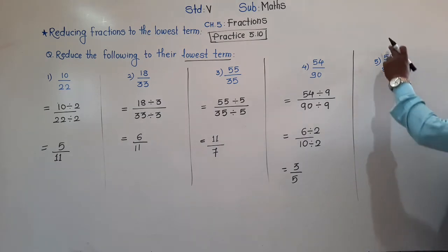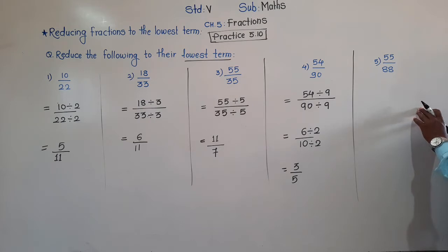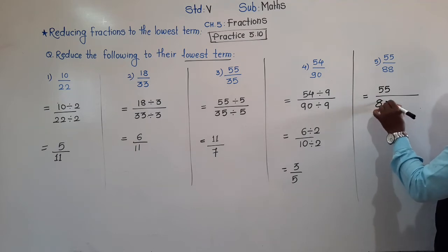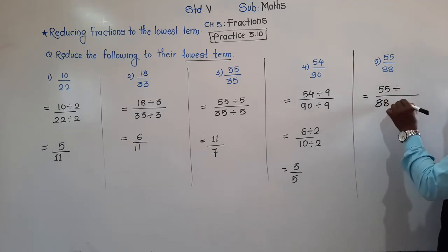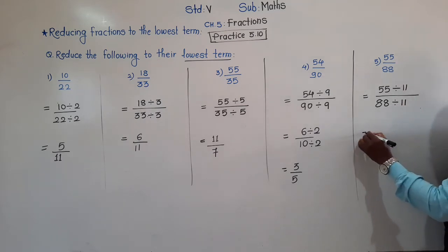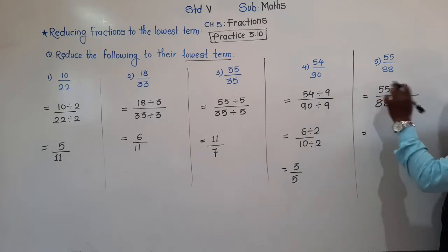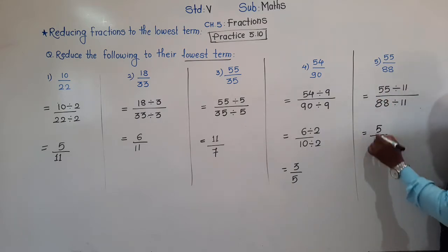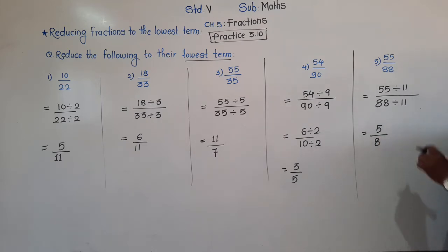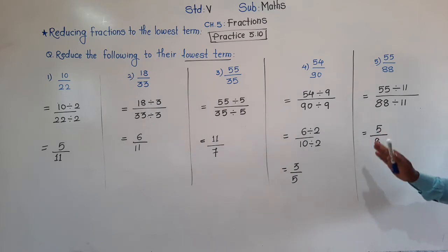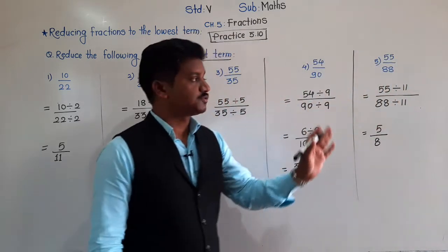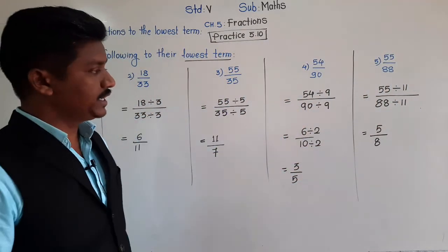Fifth example: 55 upon 88. If you know your tables, you can immediately tell that both 55 and 88 are divisible by 11. So 55 ÷ 11 = 5 and 88 ÷ 11 = 8, giving 5 upon 8. Further, 5 and 8 are not in any same table, so 5 upon 8 is the reduced form of 55 upon 88.